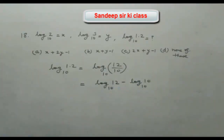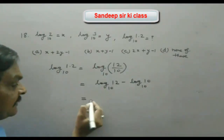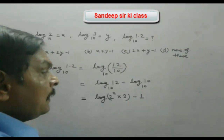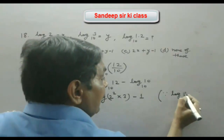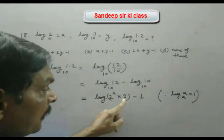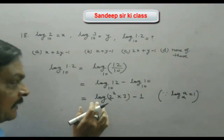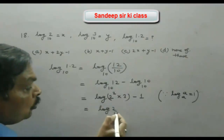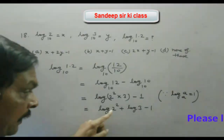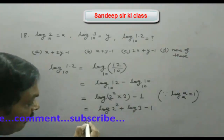Then log(12/10) = log 12 − log 10. Now 12 = 2² × 3, so log 12 = log(2² × 3) = log 2² + log 3, and log 10 to base 10 = 1. Using the power rule, log 2² = 2 log 2, giving 2 log 2 + log 3 − 1.